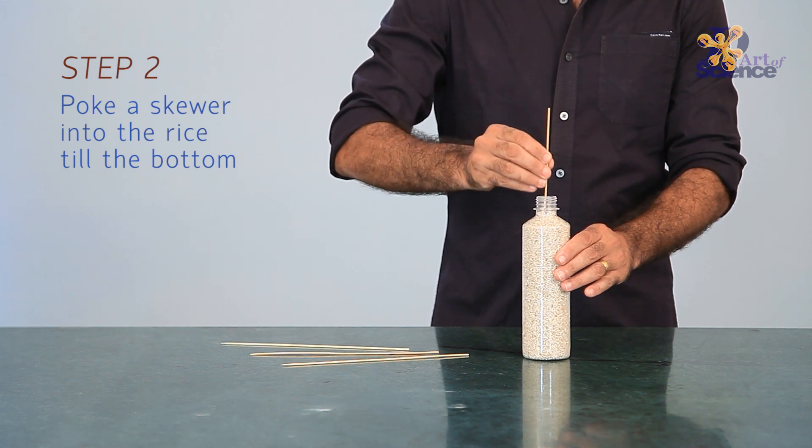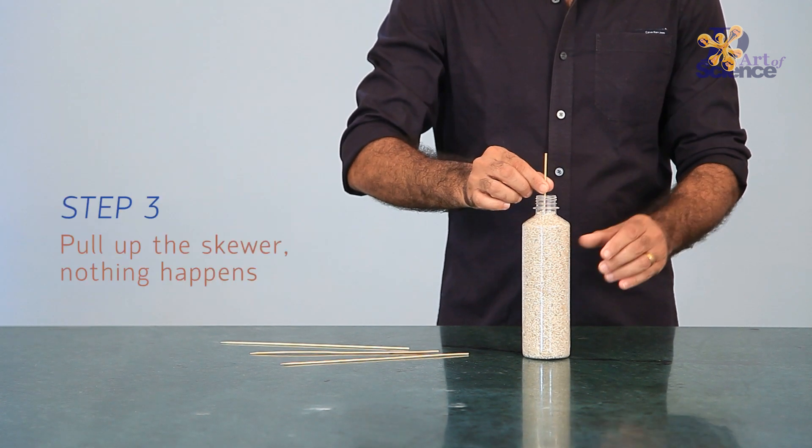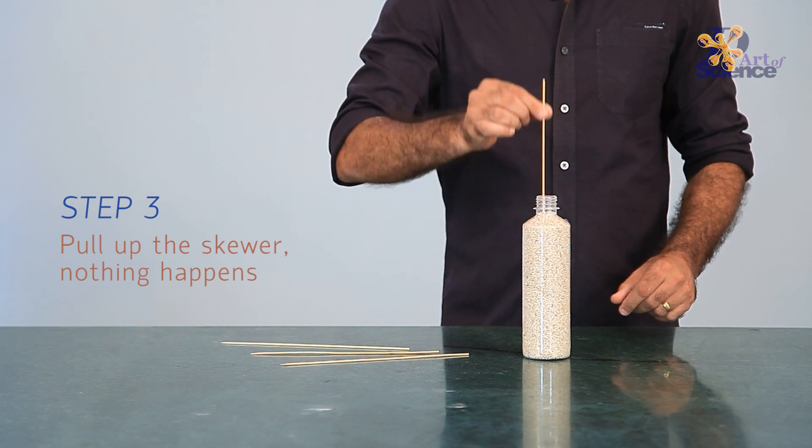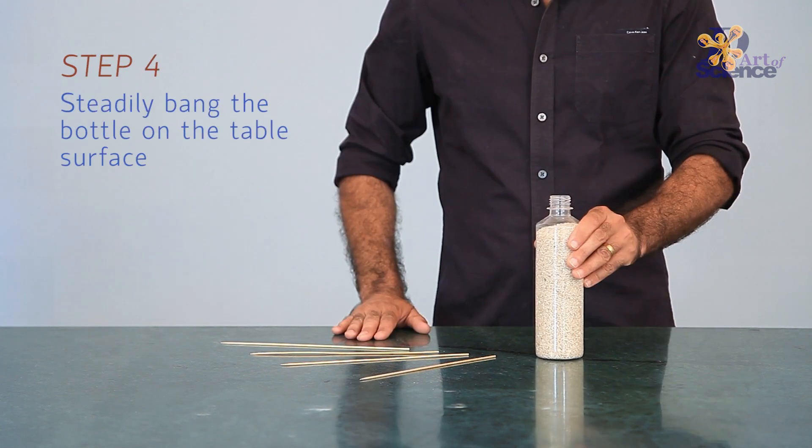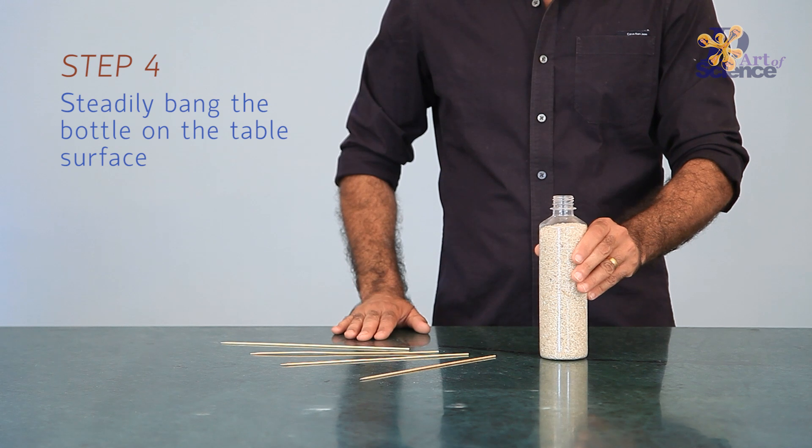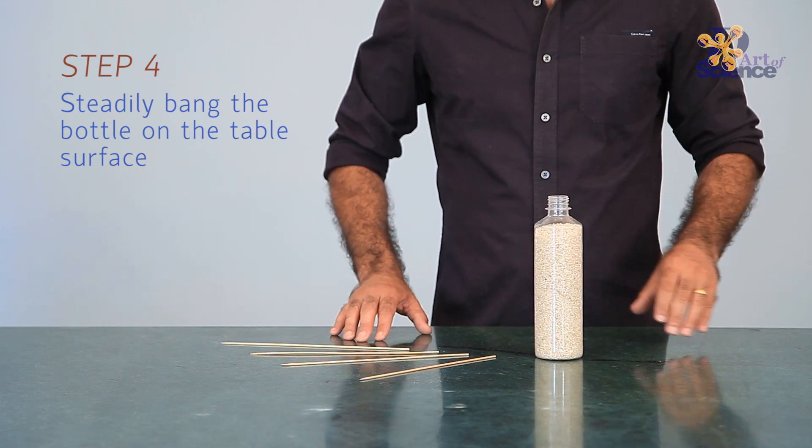When we first put the skewer in, the rice is loosely packed and so nothing happens. But when we tap the bottle on the table, the grains inside get tightly packed.